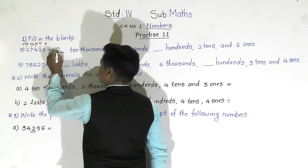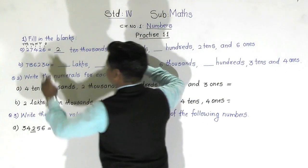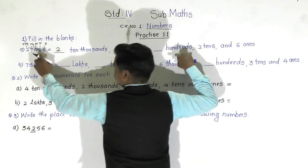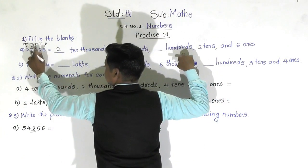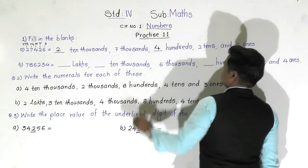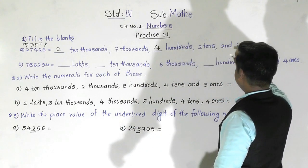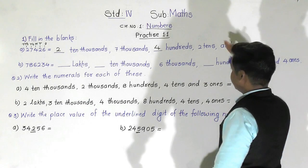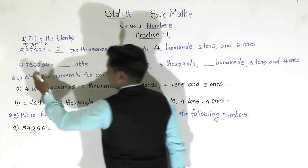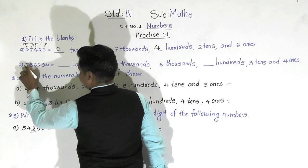The answer is two ten thousands. Then at the thousands place it is seven, and at the hundreds place the digit is four, so that will come here. Then there is two tens and six ones — those are already given.